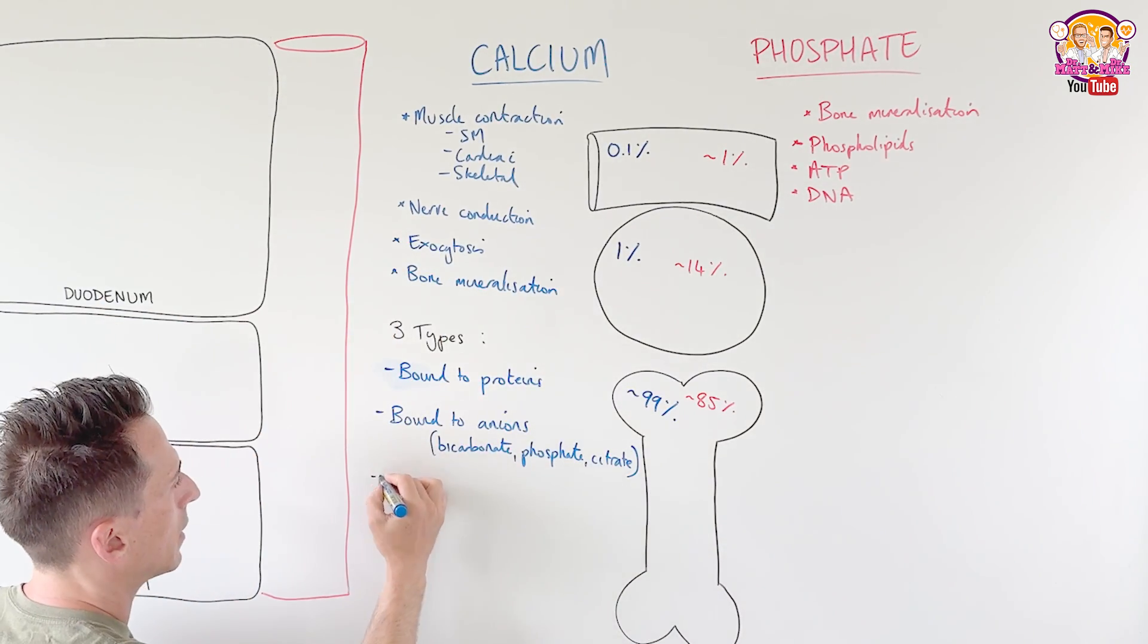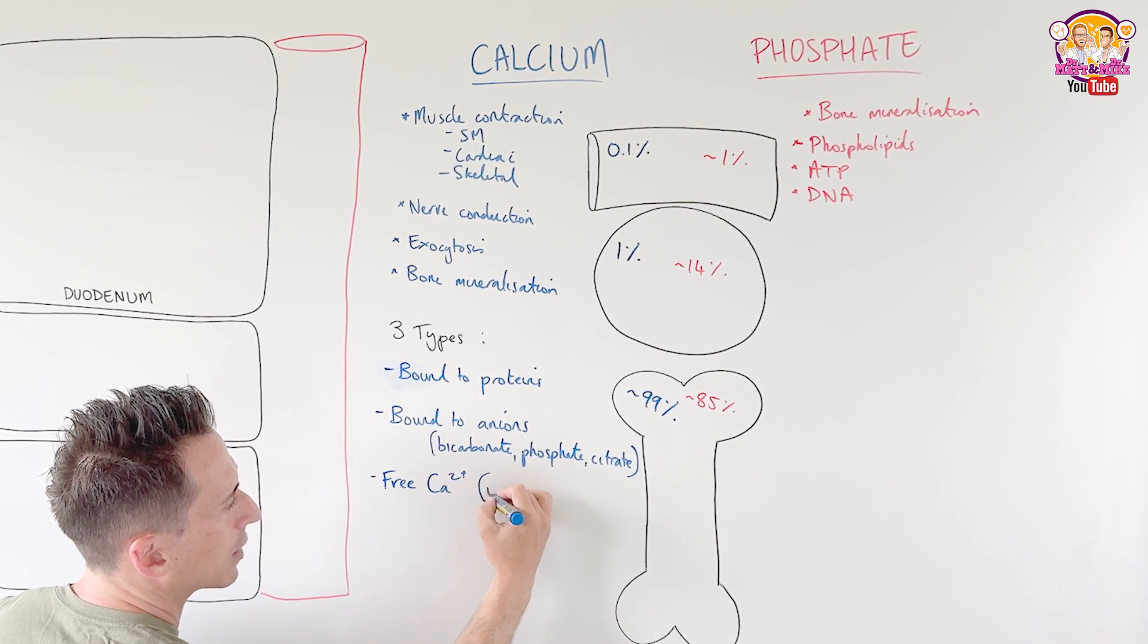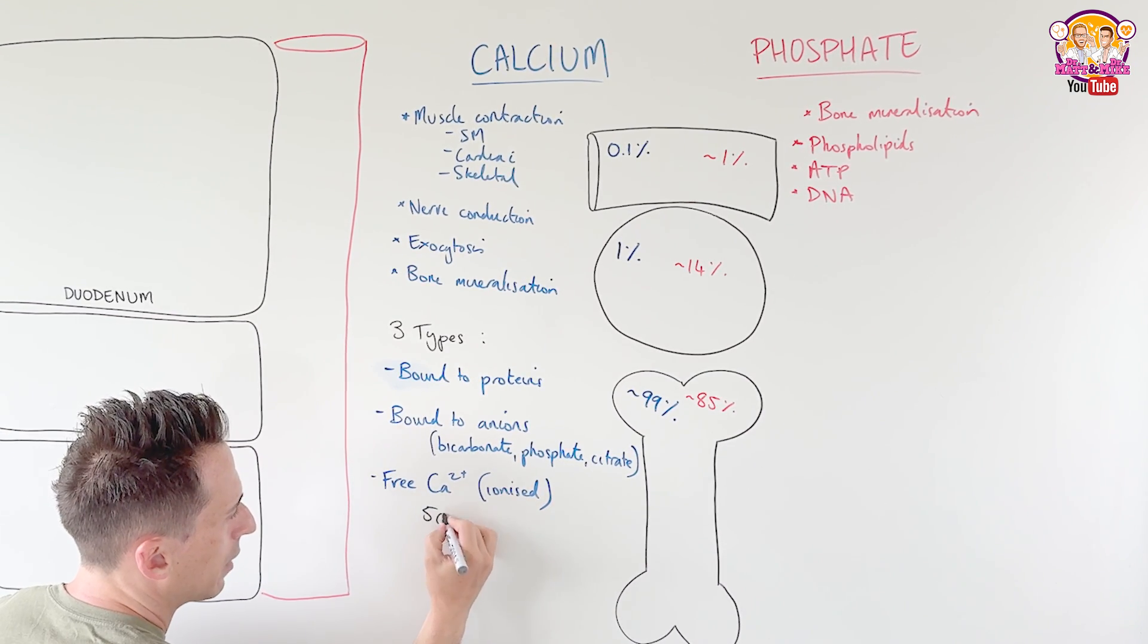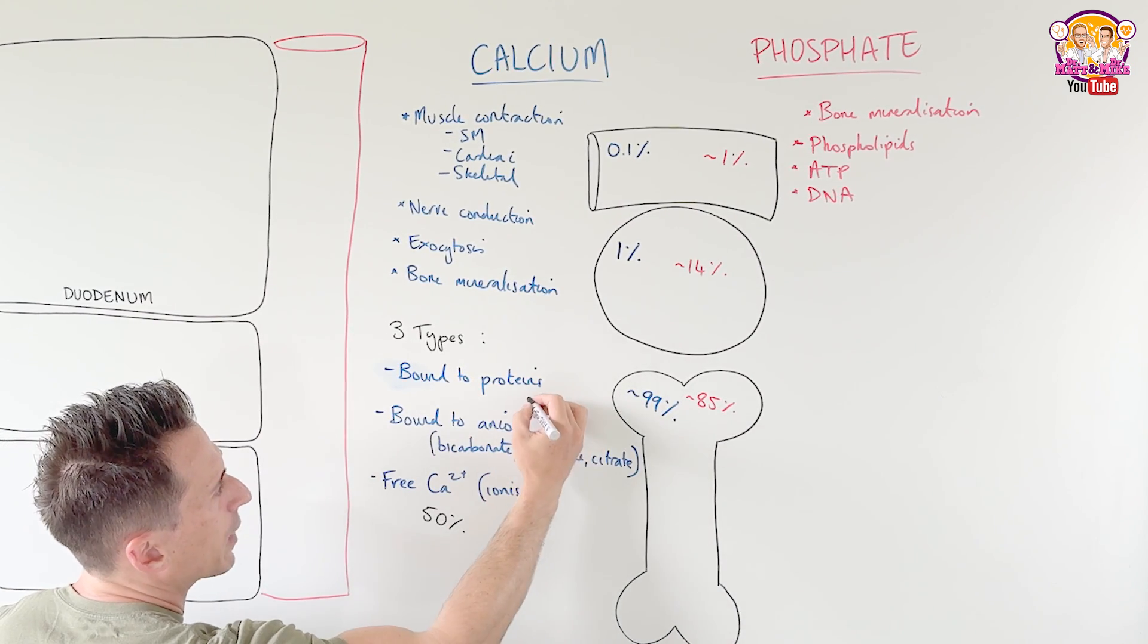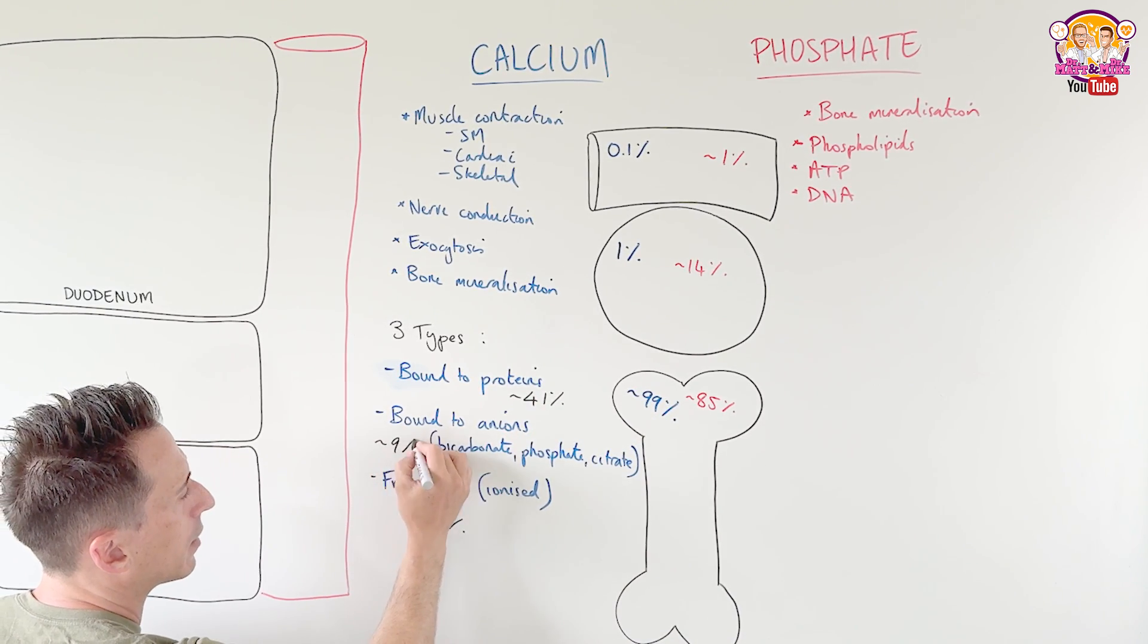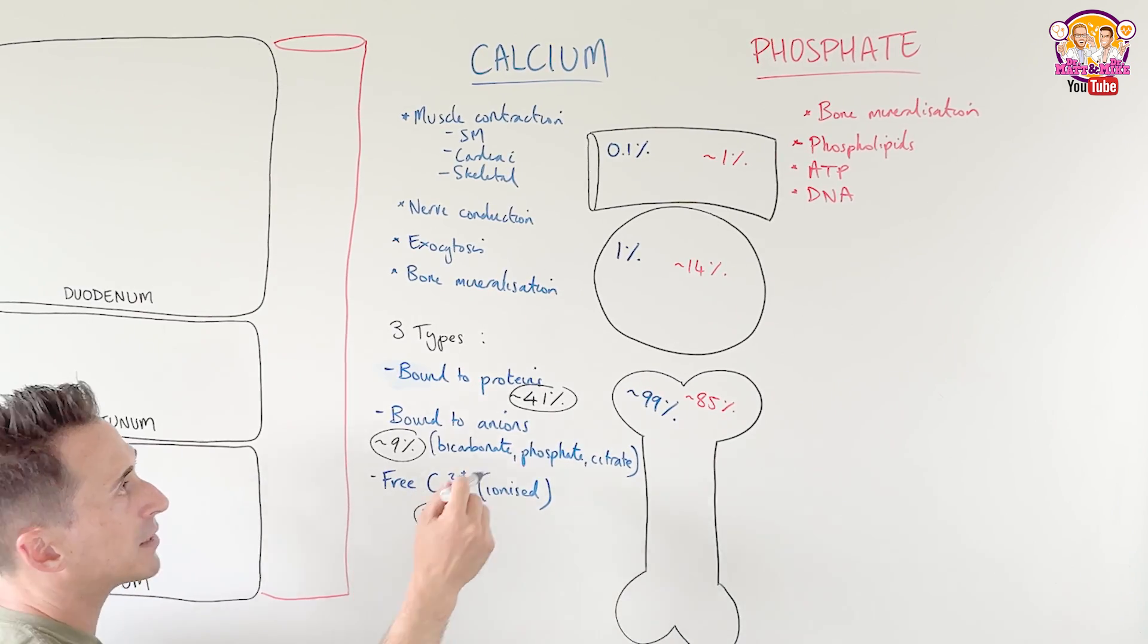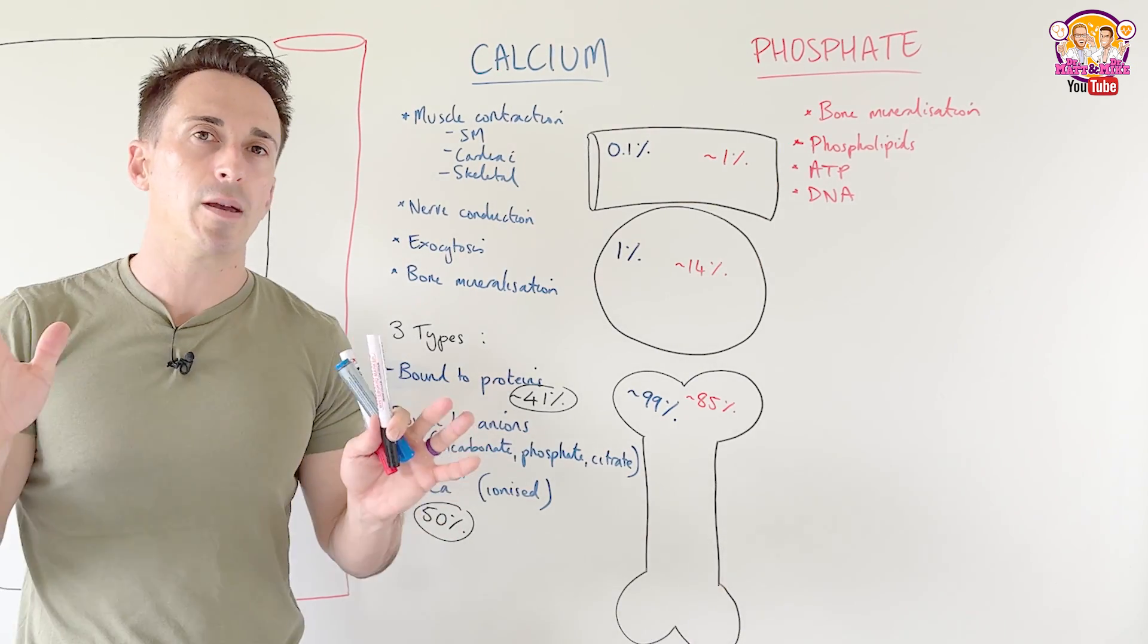So if you were to calculate these, the free calcium is around about 50% of all available calcium. That's really important. Bound to proteins, it's around about 41%. And bound to anions, it's around about 9%. So importantly, most of our calcium is available as free calcium that's ionized. And that means it's available to move in and out of capillaries for exchange, really important.